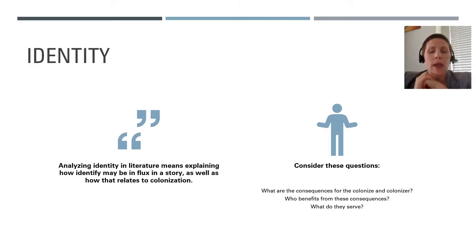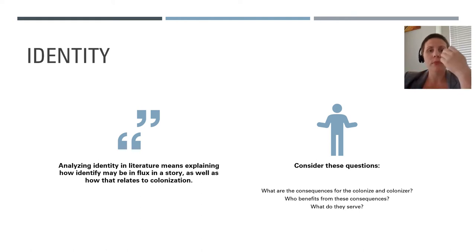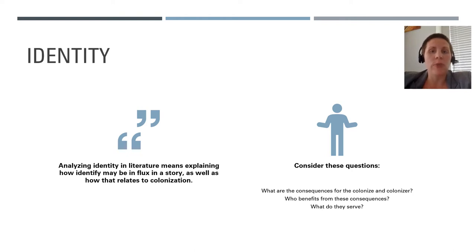The first postcolonial theme is identity. Identity is the way a person sees him or herself. This is a huge category including a person's perceived role in society, a person's sense of their own value, and specific factors like ethnicity, nationality, and personality traits.